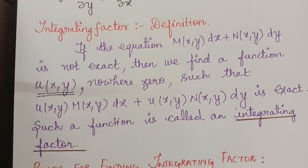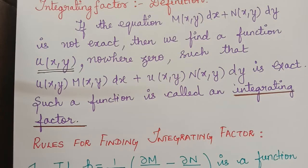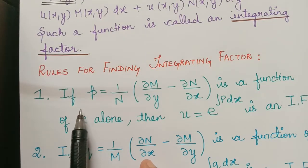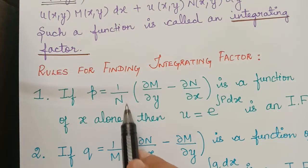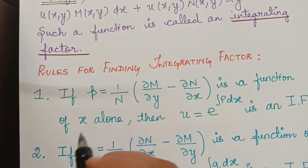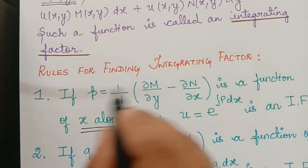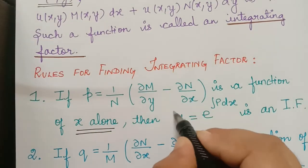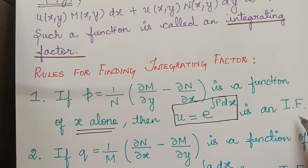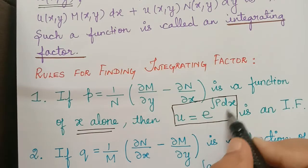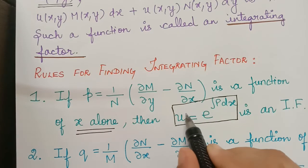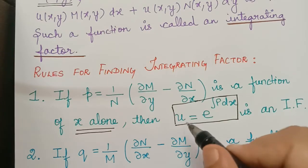There are various rules to find this integrating factor. The first rule is: if P = (1/N)(∂M/∂y − ∂N/∂x) is a function of x alone — that is, when we evaluate this and it is independent of y — then u = e^(∫P dx) will be an integrating factor. So after finding u, we multiply it with the given differential equation, convert it to an exact equation, and then solve it.